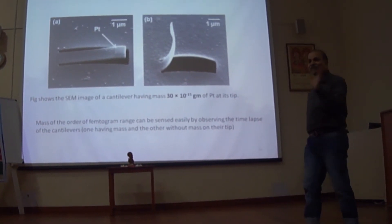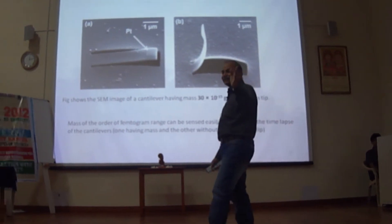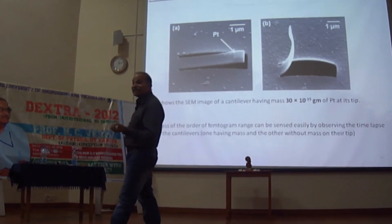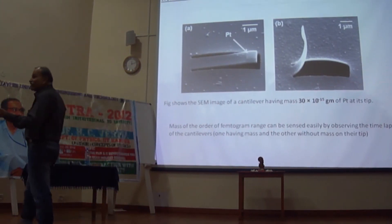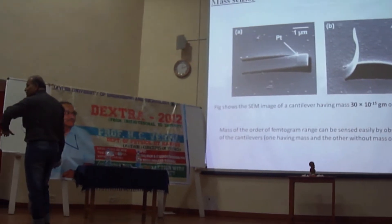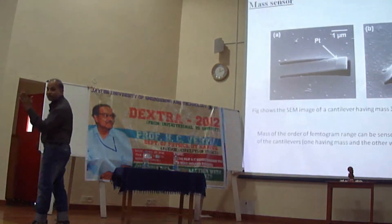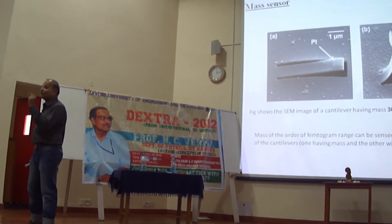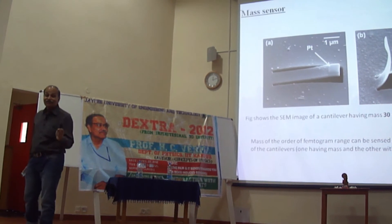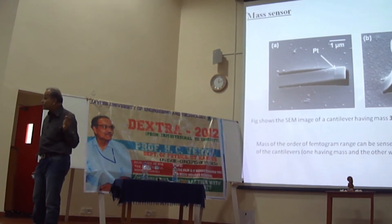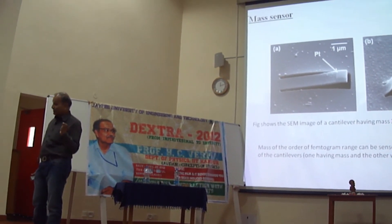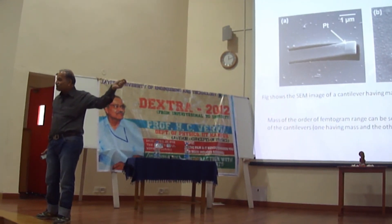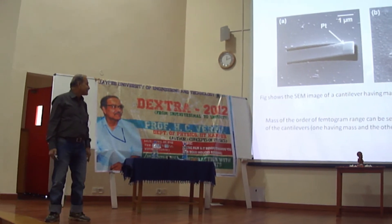The time difference is about 15 percent — if it takes 20 seconds, it takes 15 percent more time with the load, which is an easily measurable quantity. By measuring the time to bend through a given angle, I can estimate the mass of that load. So it's like a mass sensor — a femtogram mass sensor. I can sense the presence of a mass of femtograms. This is one application.